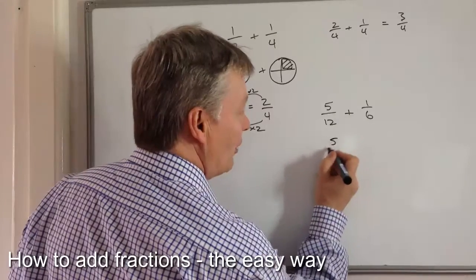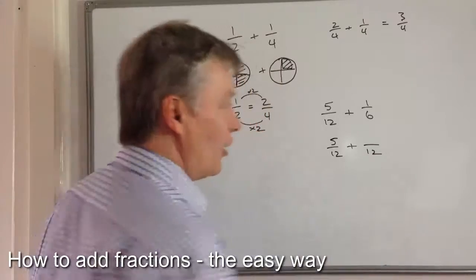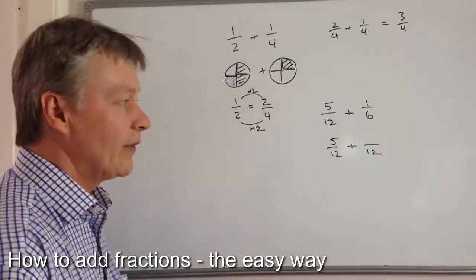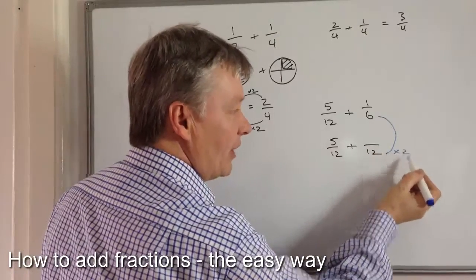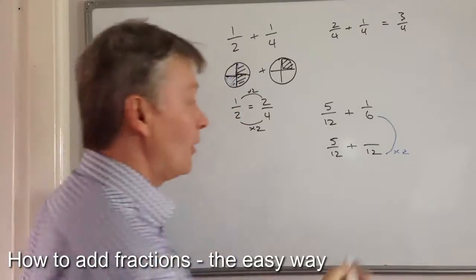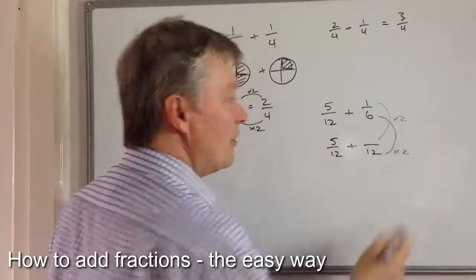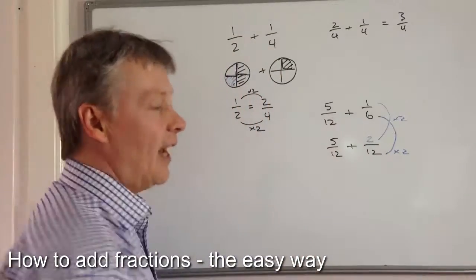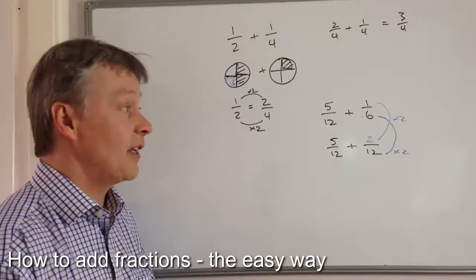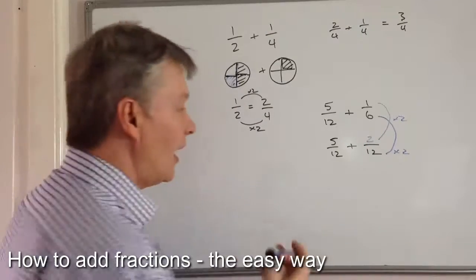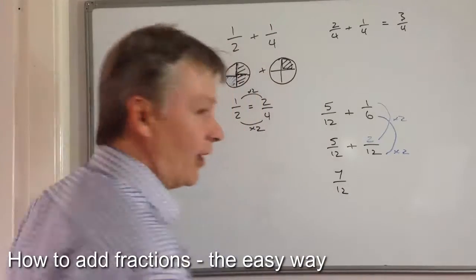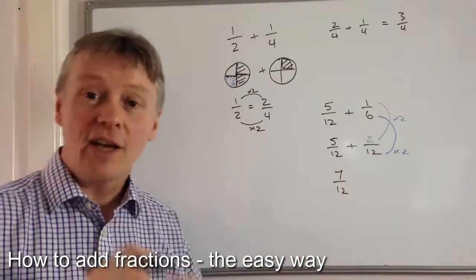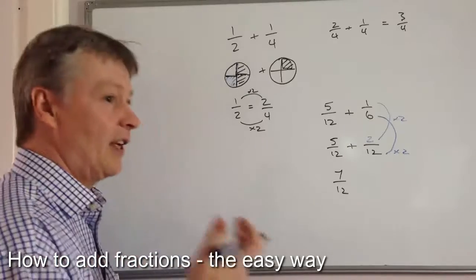So I'm going to say that will be five over twelve plus something over twelve. Now I've got one over six, and if I multiply this by two, I multiply the top number by two as well. That makes it two out of twelve. So now I can add the two together: five over twelve plus two over twelve gives me seven over twelve. I hope that's straightforward to follow if you've looked at the previous videos on equivalence.